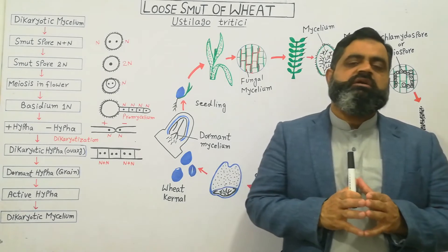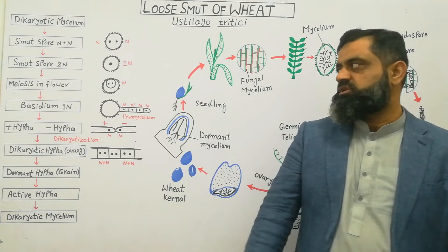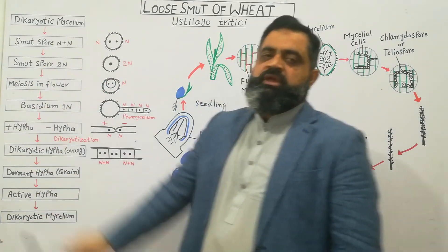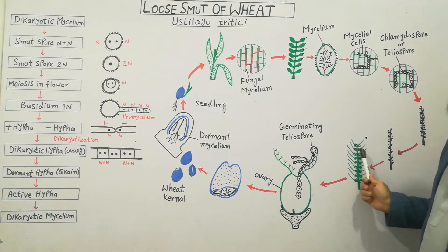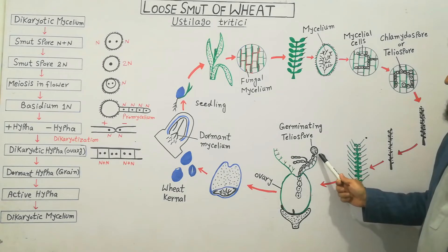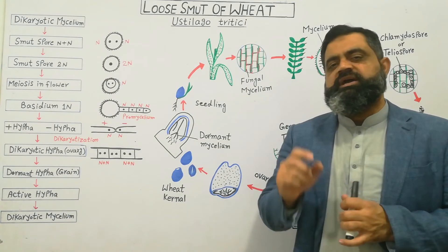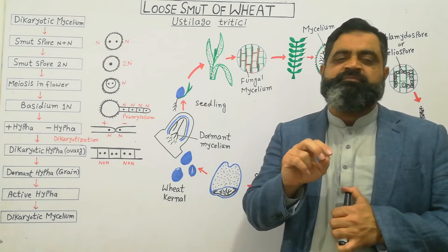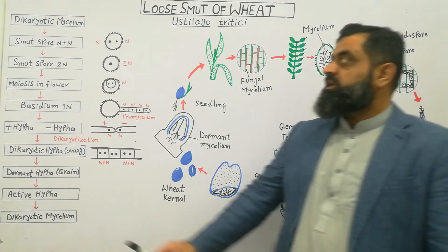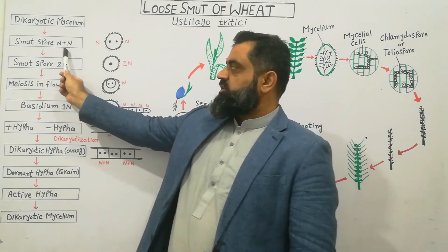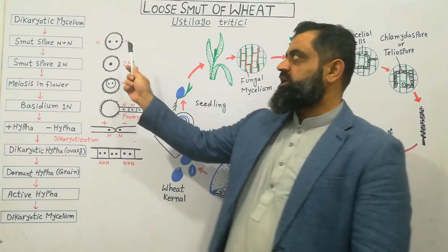Let's look at this cycle in another way to see the details more clearly. Starting with the dikaryotic mycelium — the teliospore falls on the surface of a wheat flower containing dikaryotic mycelium, meaning it contains cytoplasm and two nuclei which are haploid. This spore, known as the smut spore or teliospore or chlamydospore, is dikaryotic — it is a spore with a thick wall and two haploid nuclei inside the cytoplasm.